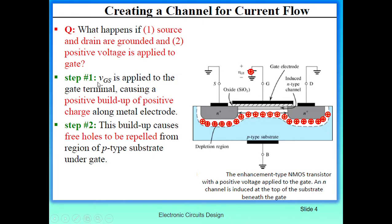We start applying VGS, the gate voltage, at the gate terminal. Here you can see this is the positive VGS and source and drain are grounded. This positive gate voltage or VGS will cause a buildup of positive charge along the metal electrode — here you can see these are the positive charges. This buildup of positive charge will cause free holes to be repelled from the region of the P-type substrate under the gate.